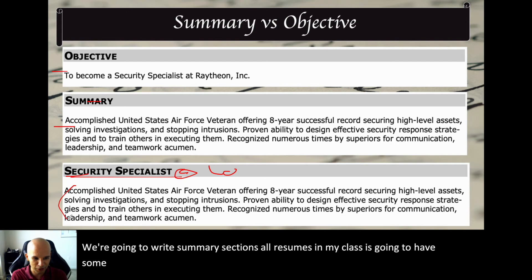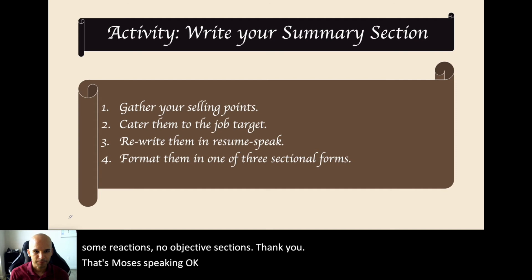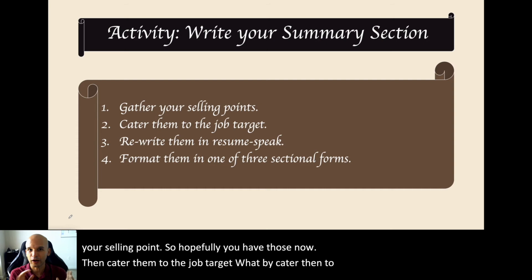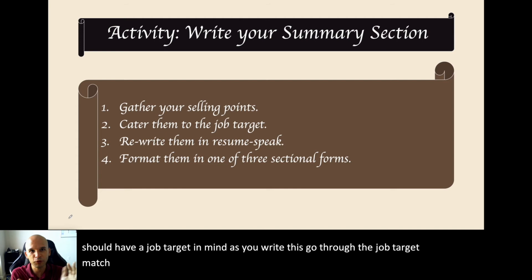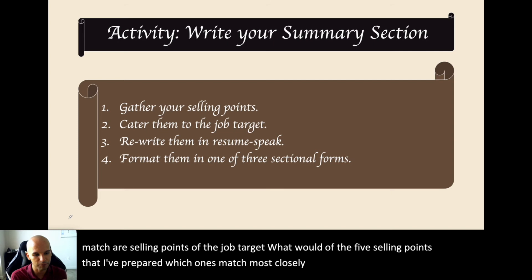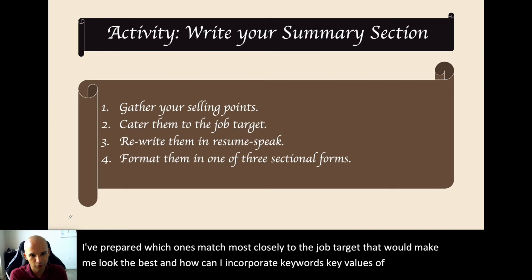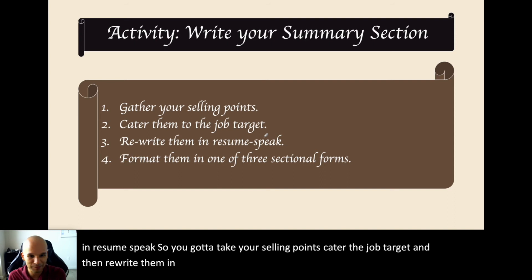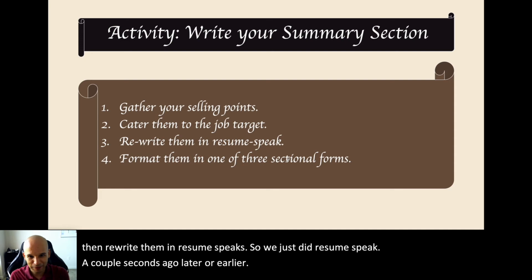All resumes in my class are going to have summary sections — no objective sections. Now here's the activity: gather your selling points from the last lecture, then cater them to the job target. Go through the job target, match your selling points to it, and identify which ones match most closely. Incorporate keywords and key values of the employer into those selling points. Then rewrite them in resume speak. Take your selling points, cater them to the job target, rewrite them in resume speak, and format them into one of the three sectional forms.